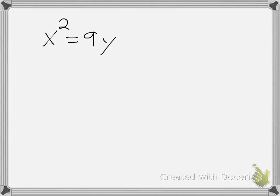In this case, I have x squared equals 9y. Now, using our parabola formula, the general one, if you recall, is x squared equals 4py.